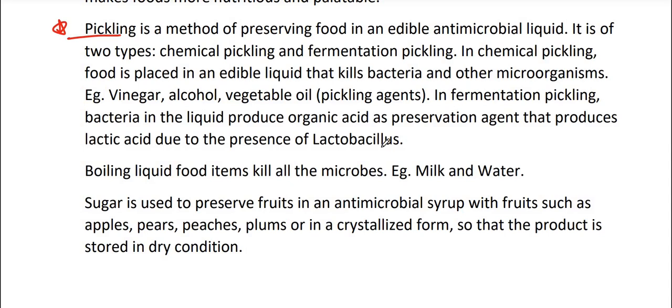Next, boiling. Boiling liquid food items kills all the microbes. Example, milk and water. Sugaring. Sugar is used to preserve fruits in an antimicrobial syrup with fruits such as apples, pears, peaches, plums or in crystallized form, so that the product is stored in dry condition.